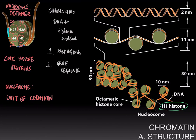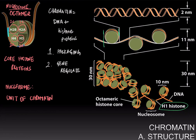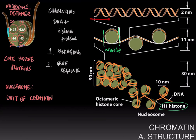DNA and histones are organized in progressively compacted structures to achieve the packaging required to fit all this DNA into the cell. The double helix has a width of about two nanometers, but this DNA wraps around nucleosomes — approximately 150 base pairs of DNA are wrapped around each nucleosome. This wrapping compacts the chromatin into a structure that's 11 nanometers wide, which is six-fold more compact than DNA on its own.